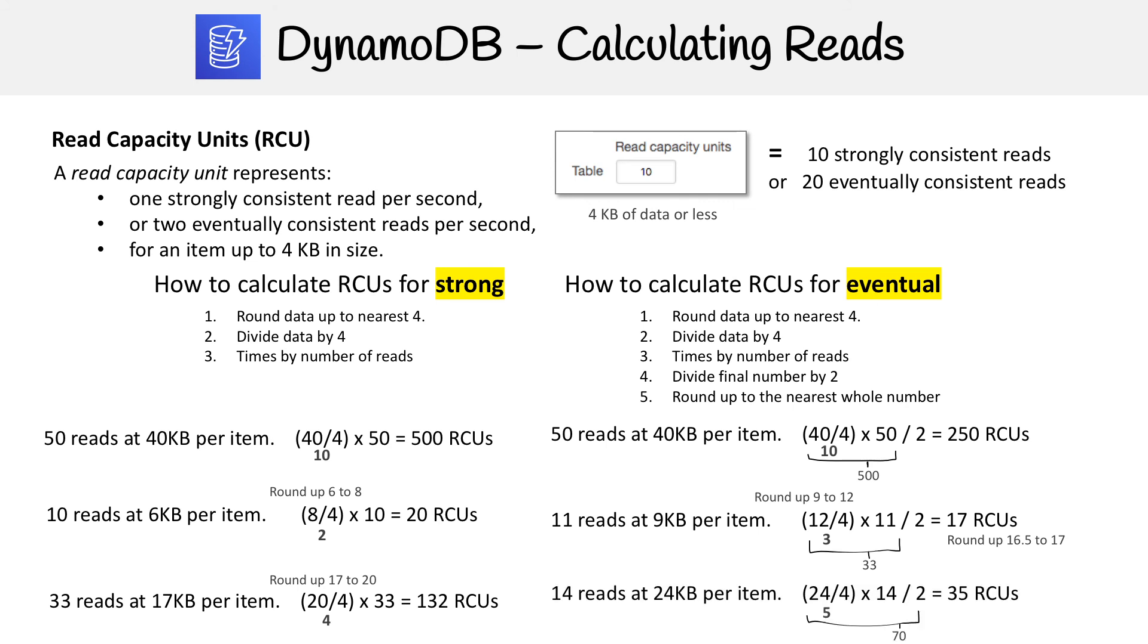And then one more example here. So let's say we have 14 reads at 24 kilobytes per item. So 24 is divisible by four. So that gives us... or sorry, 24 divided by four is five. And then five times 14 is 70. And then divide that by two gives us 35 RCUs.